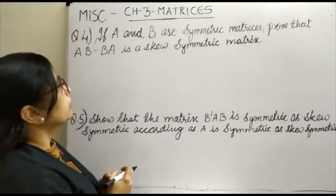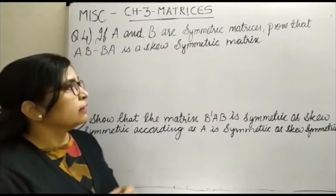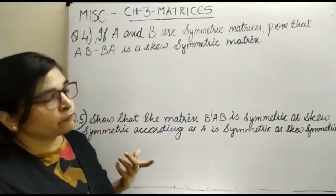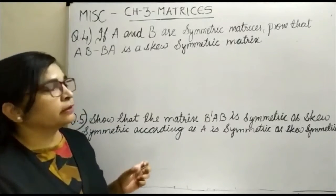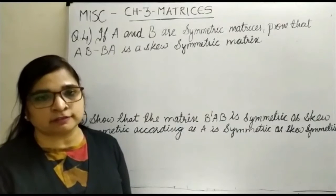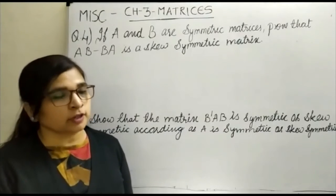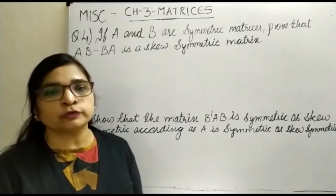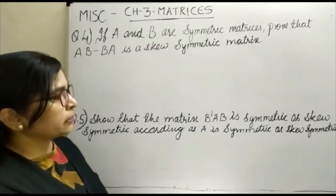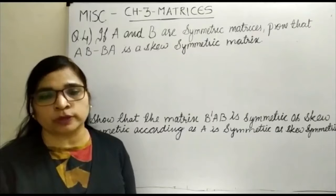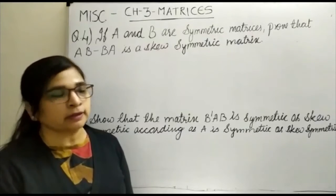Hello everybody. Today in the chapter on matrices, we are going to see some theoretical questions which we have to prove on the basis of symmetric and skew symmetric matrices. A symmetric matrix is one in which the transpose of the matrix is equal to itself, whereas a skew symmetric matrix is one in which when you take the transpose you get the negative of the matrix.